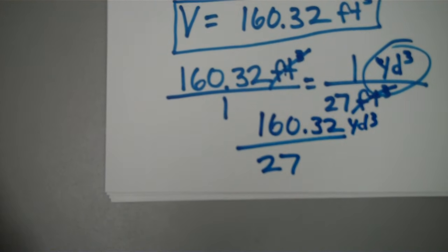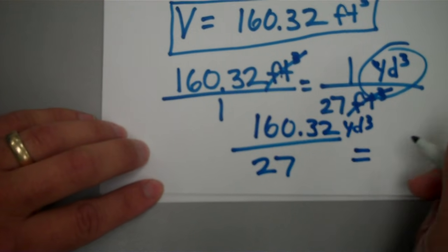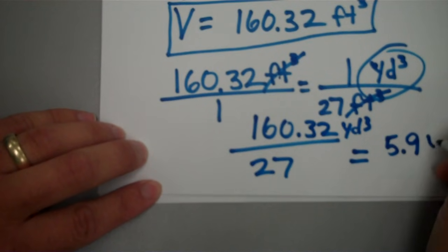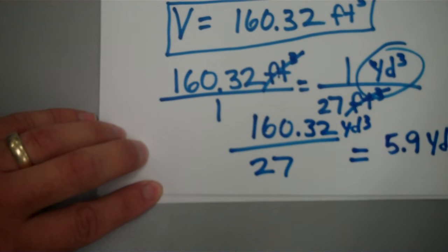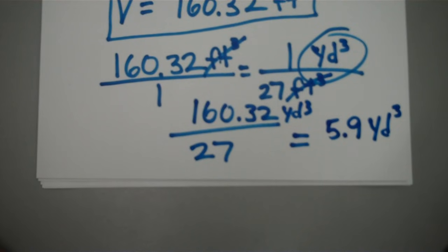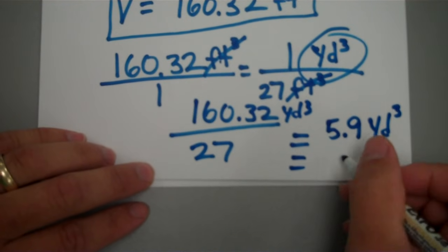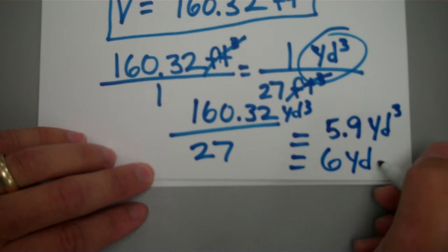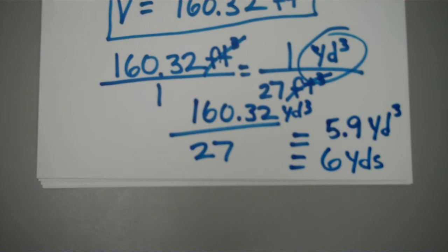Whenever you do that, divide it by 27, you're going to end up with a number of 5.9 yards cubed. Basically if I were going to order this, I'd go ahead and order six yards.